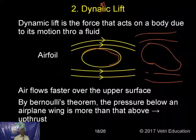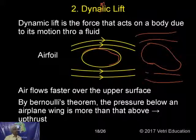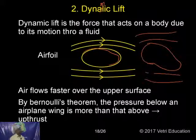Therefore all the air rushes in the upward direction. What happens? The aeroplane moves up. The bird wing is also the same type. The pressure energy should be constant in all paths. In order to equalize, the air rushes from bottom to top; therefore the aeroplane lifts from the ground.